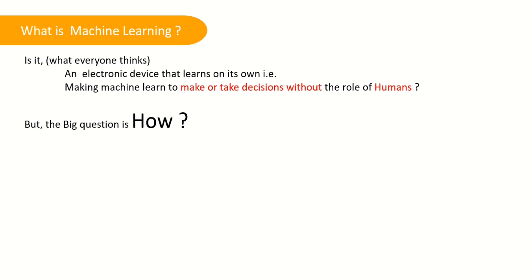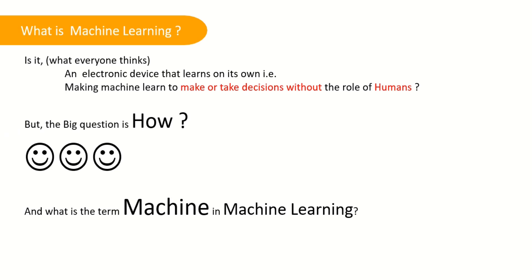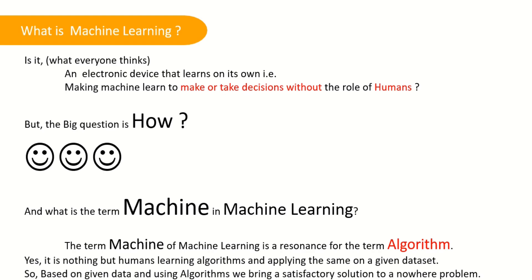But the big question is how? And moreover, what is the term machine in machine learning? The term machine of machine learning is a resonance for the term algorithm. Yes, it is nothing but humans learning algorithms and applying the same on a given data set.